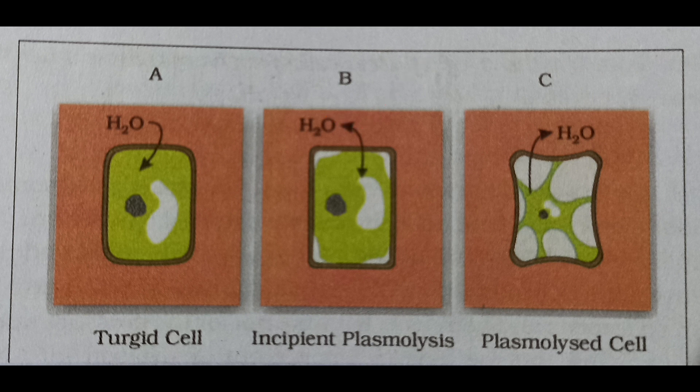When the cell is left in the hypertonic solution for more time, the protoplasm completely shrinks and the cell is said to be fully plasmolyzed. The movement of water occurs across the membrane, moving from an area of higher water potential to an area of lower water potential.